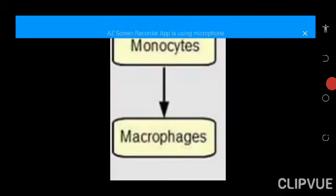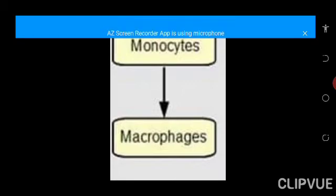Monocytes are the second example of the agranulocyte family — the partner to lymphocytes. In terms of number, they are the third most abundant of all white blood cells. The first most abundant are neutrophils, followed by lymphocytes, followed by monocytes. The least abundant are the basophils.